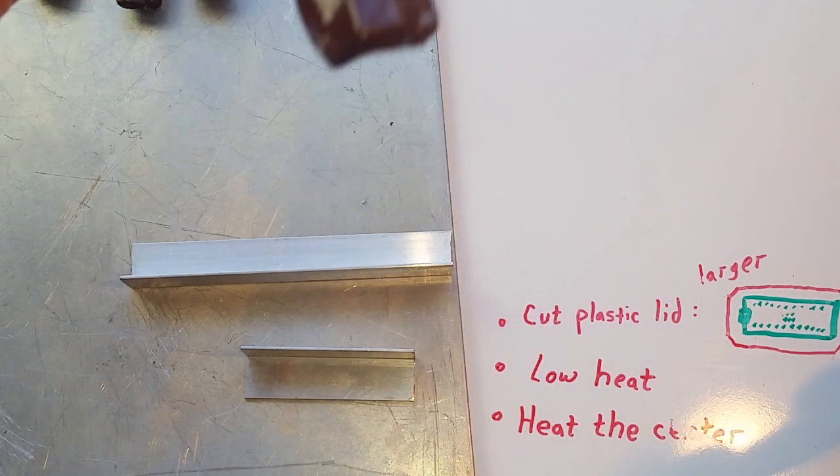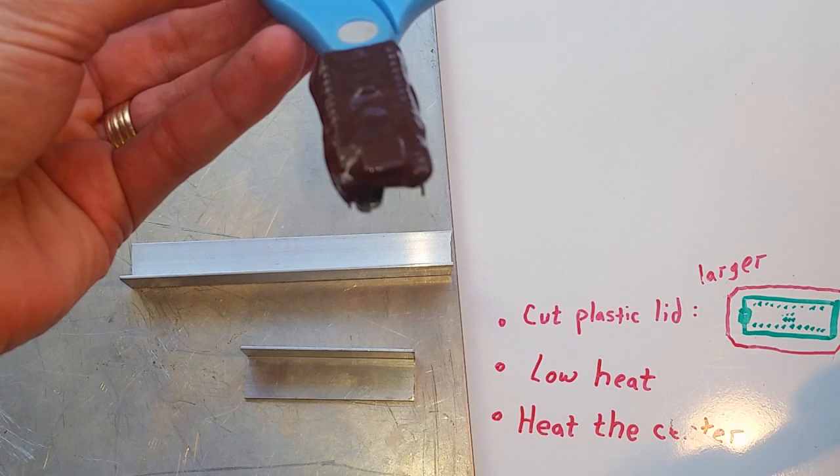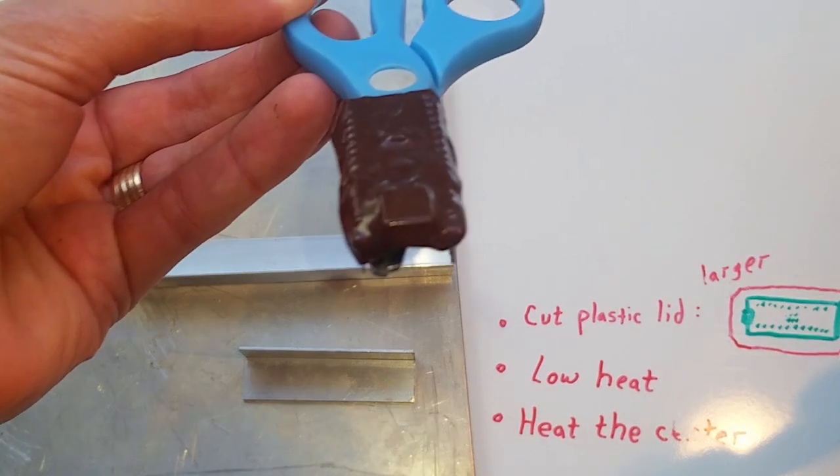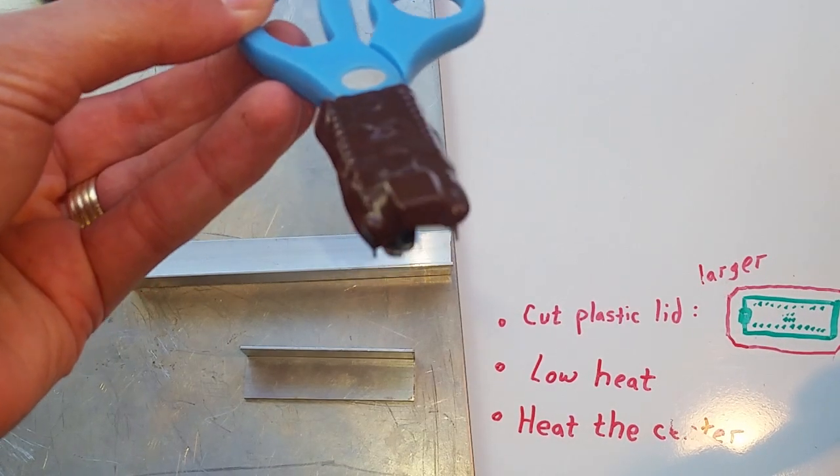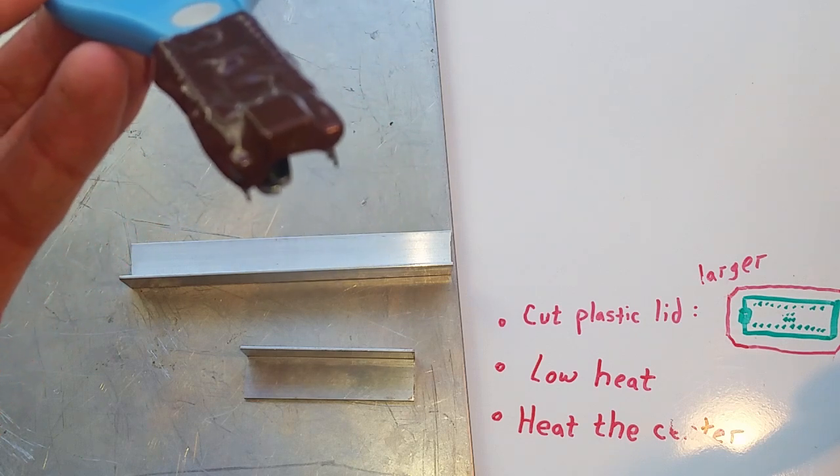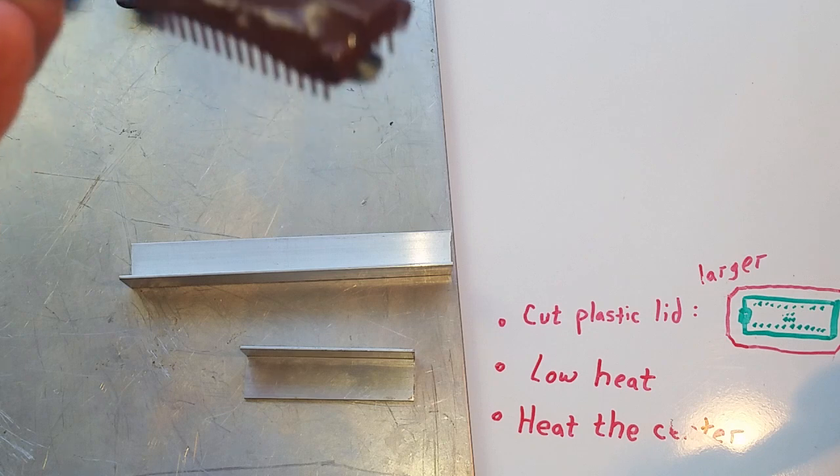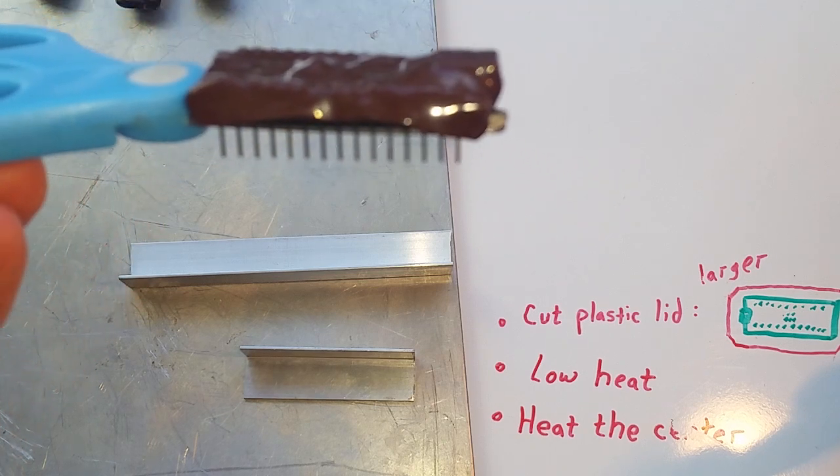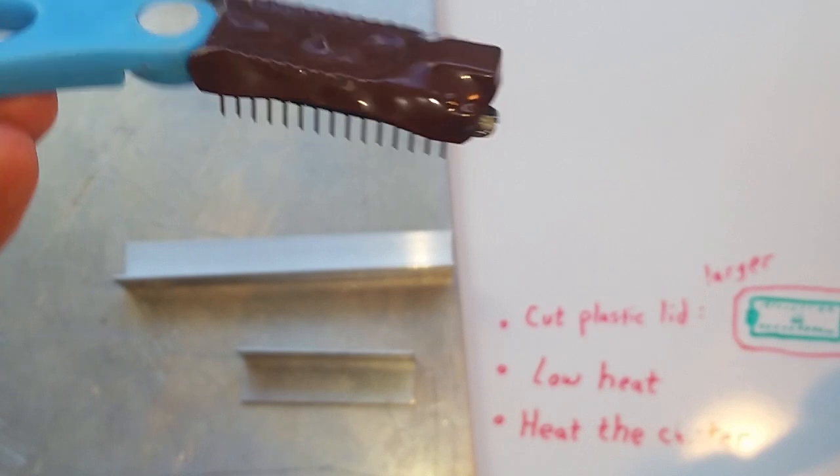This one came out well. This one covers the USB port which is what I wanted. Otherwise you can take an X-Acto knife and cut it away or leave less material in the first place so it doesn't cover it up. The sides, it's acceptable. They don't go down too far.